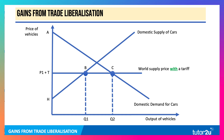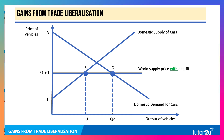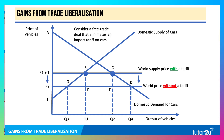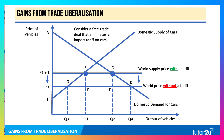Here's the diagram you might want to use if you get a question on trade liberalisation — let's look at the car industry. Initially the price is P1 plus T, that's the world supply price with a tariff. Consider a free trade agreement that eliminates an import tariff. With trade liberalisation, it's actually the tariff diagram in reverse: it brings down average tariff rates, and therefore the world supply price falls without a tariff from P1 plus T to P2.